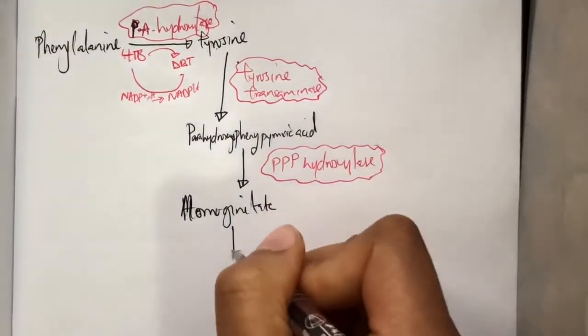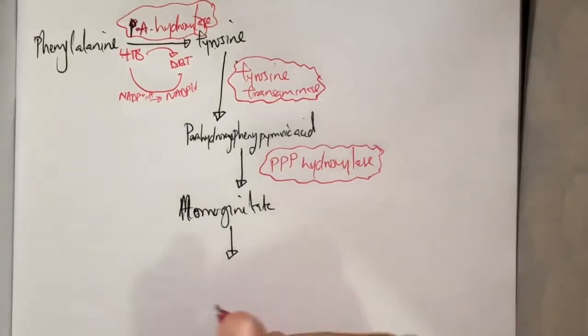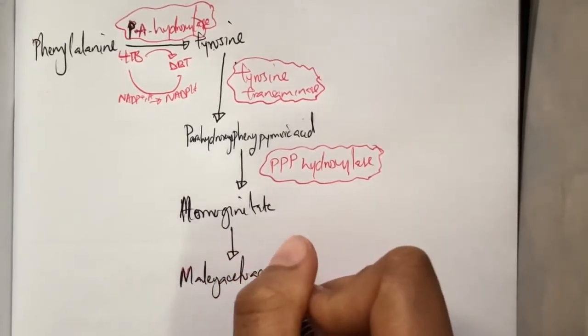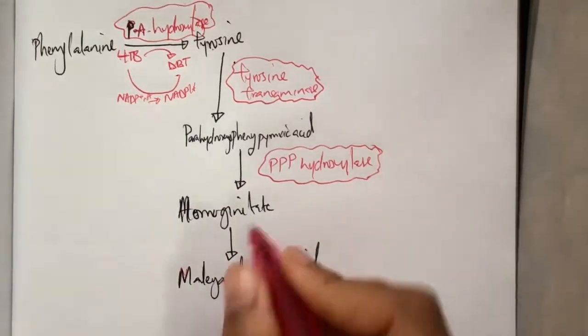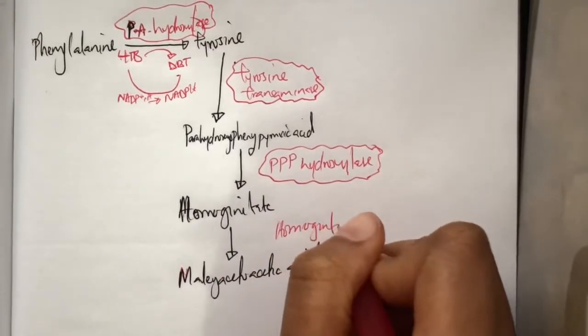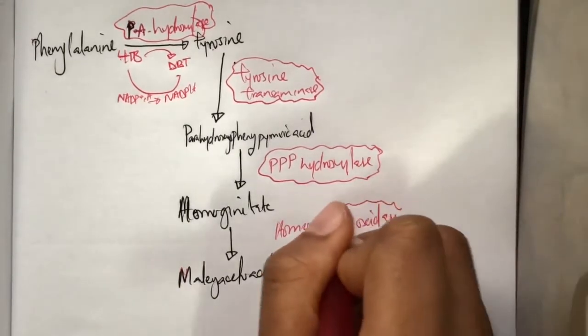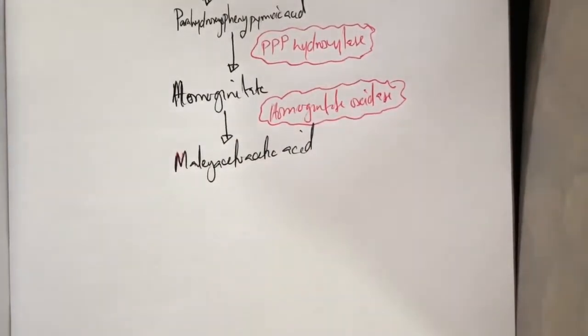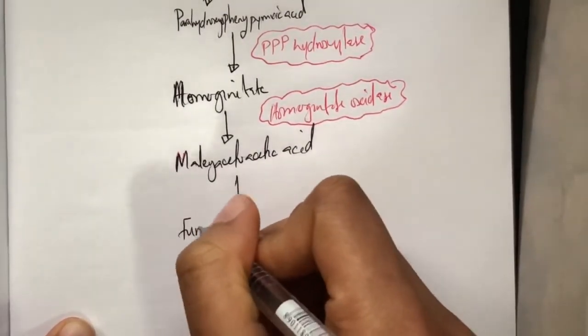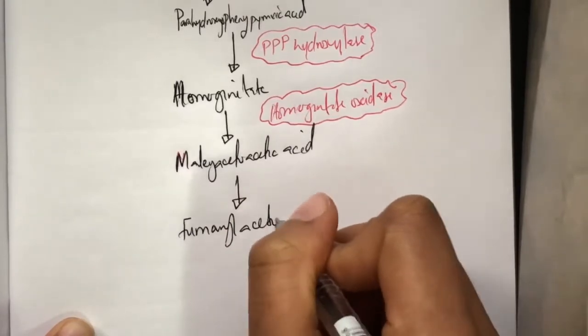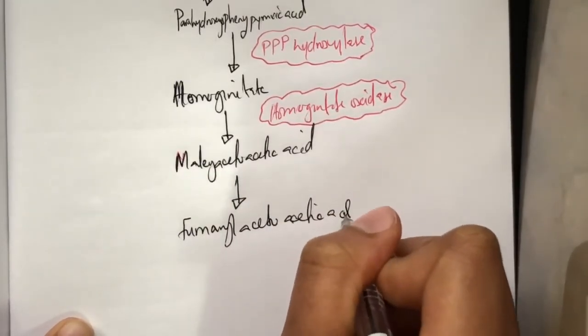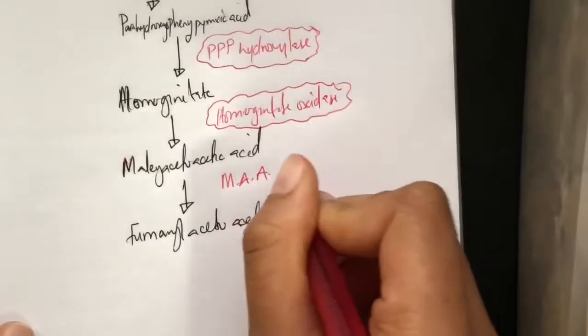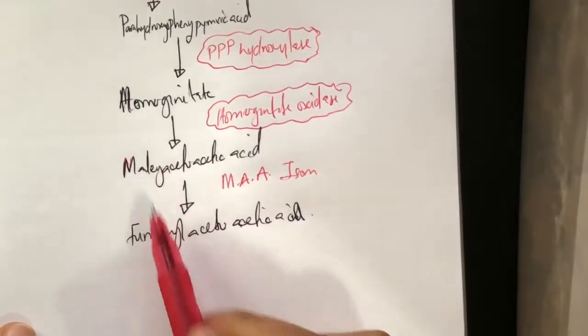Homogentisate is then converted into maleylacetoacetic acid by the help of homogentisate oxidase. And maleylacetoacetic acid is converted into fumarylacetoacetic acid by the help of an enzyme known as maleylacetoacetate isomerase. If you recall, maleate and fumarate are isomers.